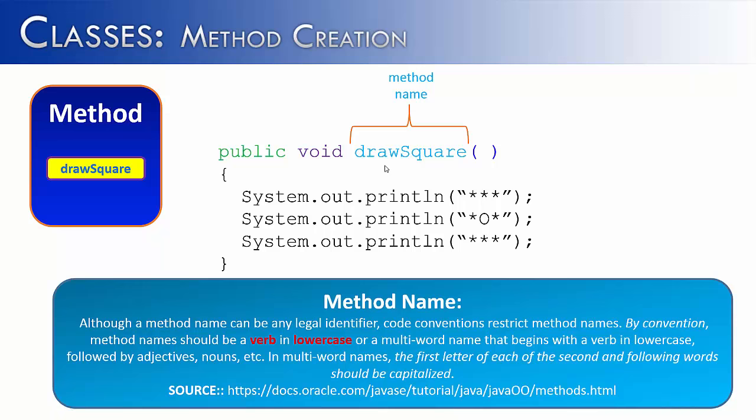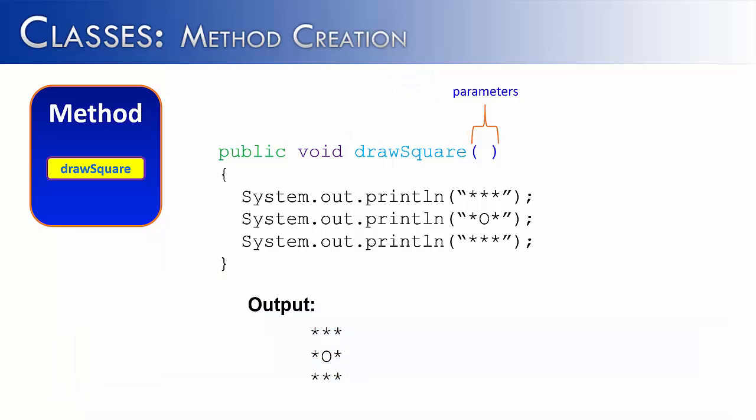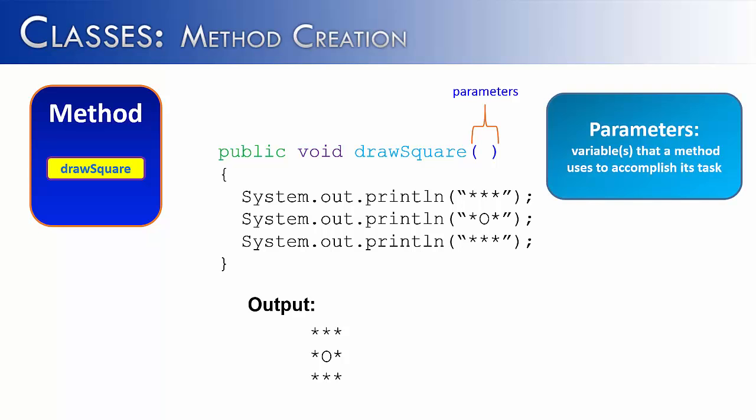Lastly, we deal with parameters. There's actually no parameters on this particular method. If we had some, they might dictate how large is our square going to be, how many rows, how many columns, etc. But what parameters are, they're variables that a method uses to accomplish its task. So I've kept this method fairly simple, and I've refrained from putting parameters in. In a later video, we're going to look at exactly what parameters are, how to write them there, and how to use them.